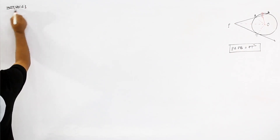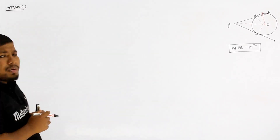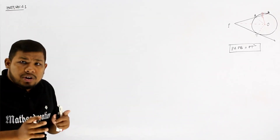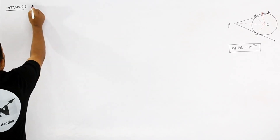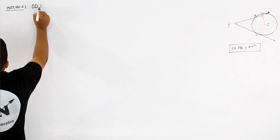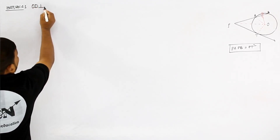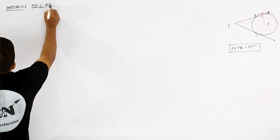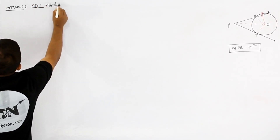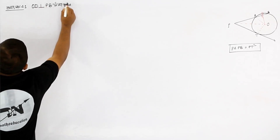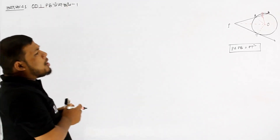Construction: first construction. O D perpendicular to P B. Draw a long line — a long button issue, long button.